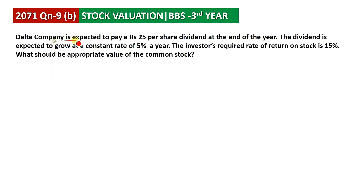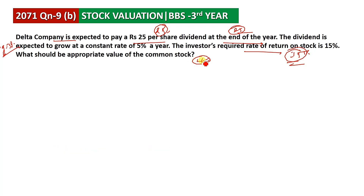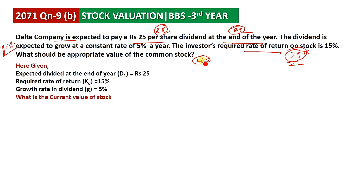Next question: Delta Company is expected to pay a dividend of 25 per share. The required rate of return is 15%. A tip note: if the dividend is stated as expected at the end of the year, it is a future tense, so use D1. If present tense or past tense, use D0.